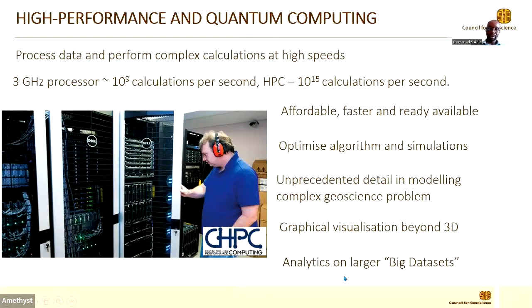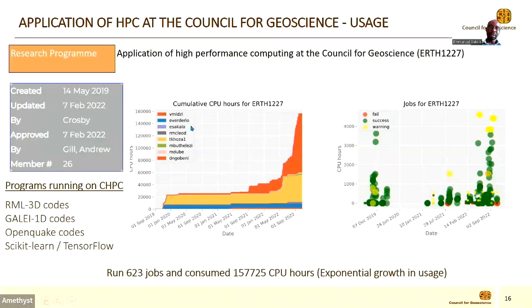In terms of HPC application at the Council for Geoscience, we started using HPC in May 2019 and have seen exponential growth in usage over the years. The codes we run mainly include EM1D 3D inversion codes, geoscience analyst, the GALEI 1D inversion codes, and open source codes. So far we've run 2,623 jobs with over 150,000 CPU hours.